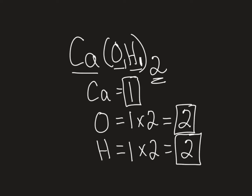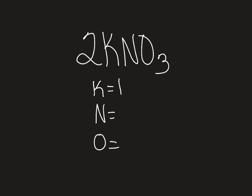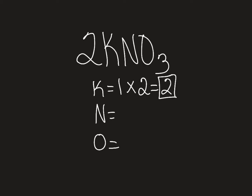Let's look at another formula in another situation. Let's look at potassium nitrate again. We counted these atoms before and had one potassium, one nitrogen, and three oxygen. But what if there was a coefficient of two in front of this formula? This coefficient changes the number of atoms. So we list potassium, nitrogen, and oxygen again. There's one potassium, but we multiply it by the coefficient of two, giving us two potassiums. Nitrogen is the same — one nitrogen times the coefficient of two gives us two nitrogens.